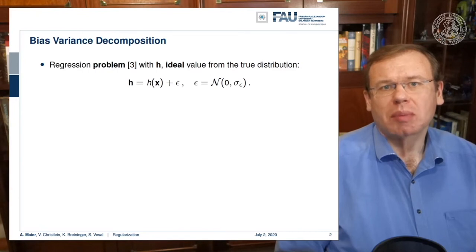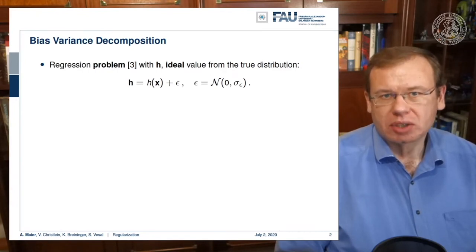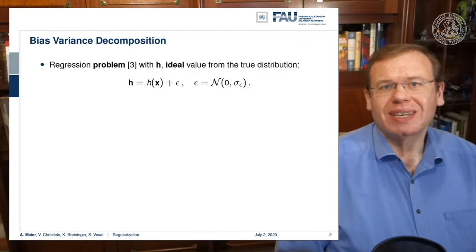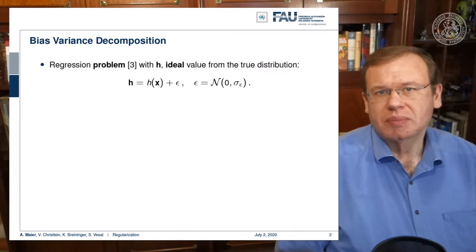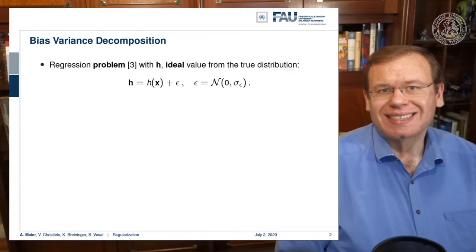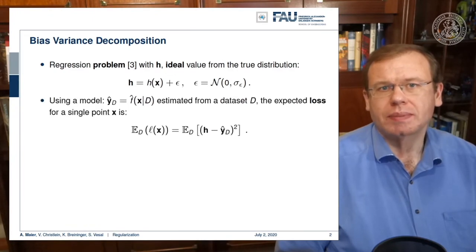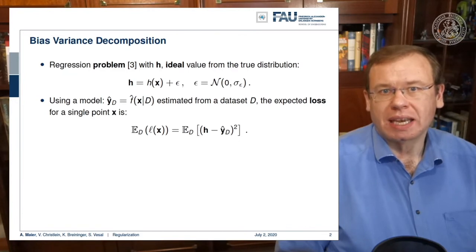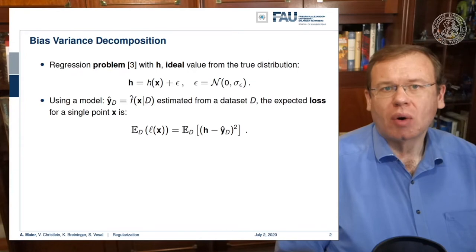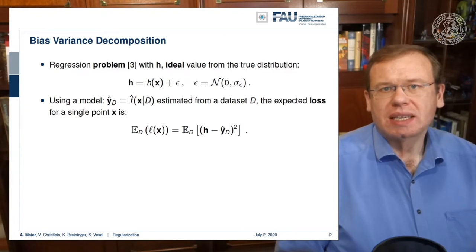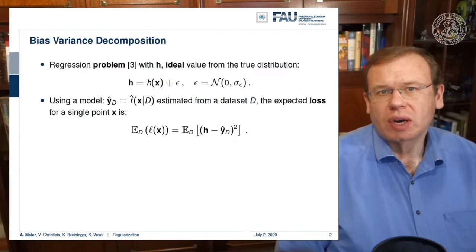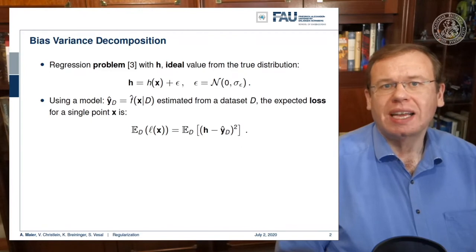We can analyze this problem using the bias-variance decomposition. Here we stick to regression problems where we have an ideal function h(x) that computes some value, typically associated with some measurement noise — an additional value epsilon added to h(x), distributed normally with zero mean and standard deviation sigma. We use a model f-hat estimated from some dataset D to estimate h. We can express the loss for a single point as the expected value of the l2 loss: the true function minus the estimated function, squared.